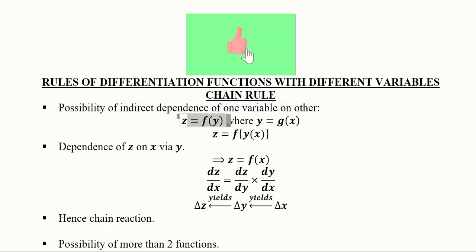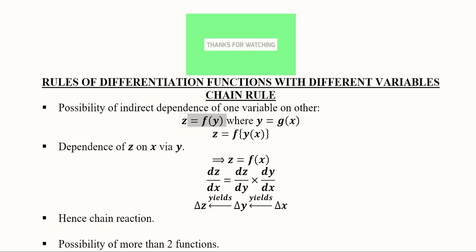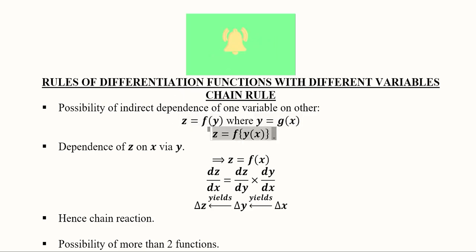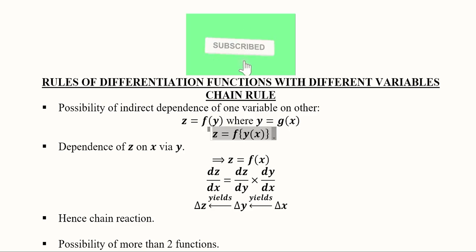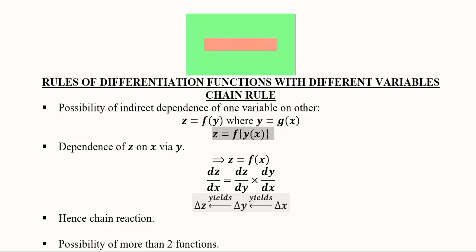Consider this first function: z depends upon y, and further y depends upon x. This is the indirect dependence of z on x, because x is going to affect y and y is going to affect z. So x is indirectly determining the variable z.